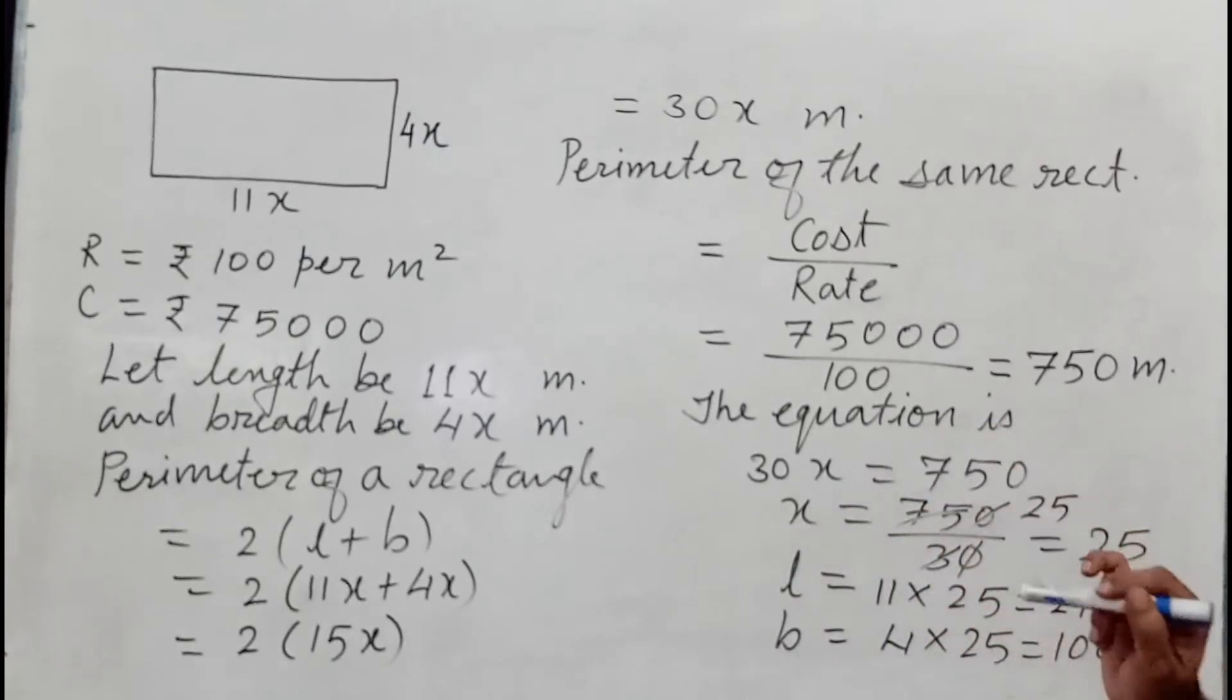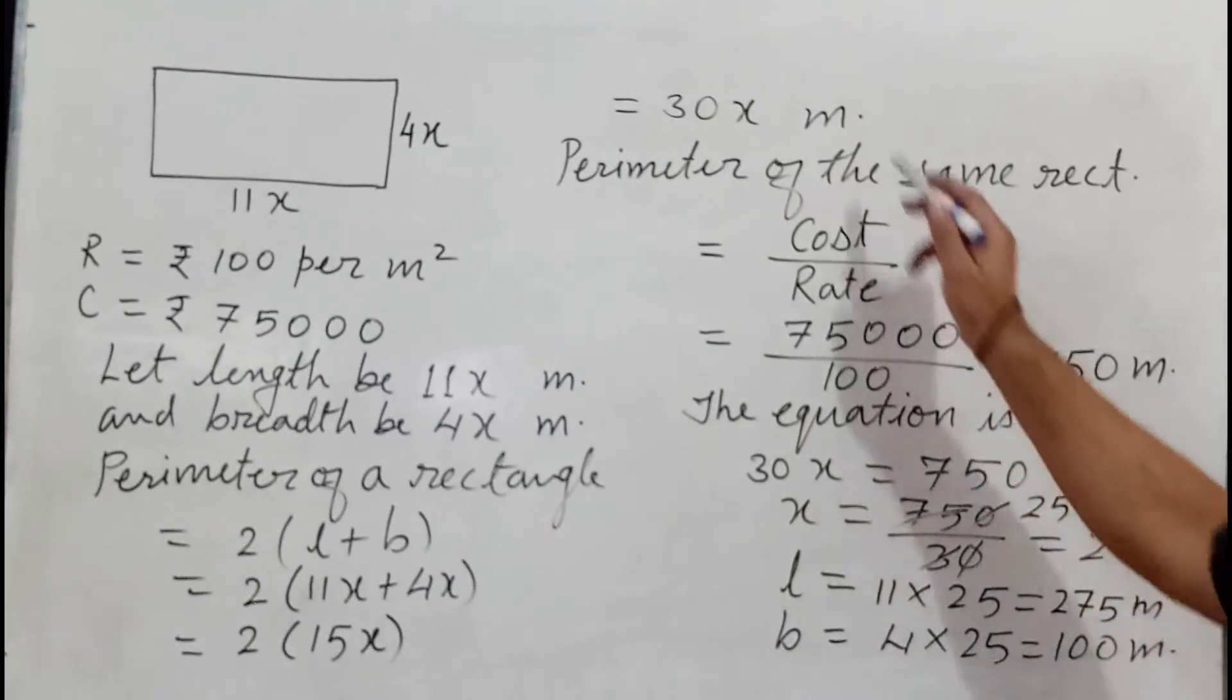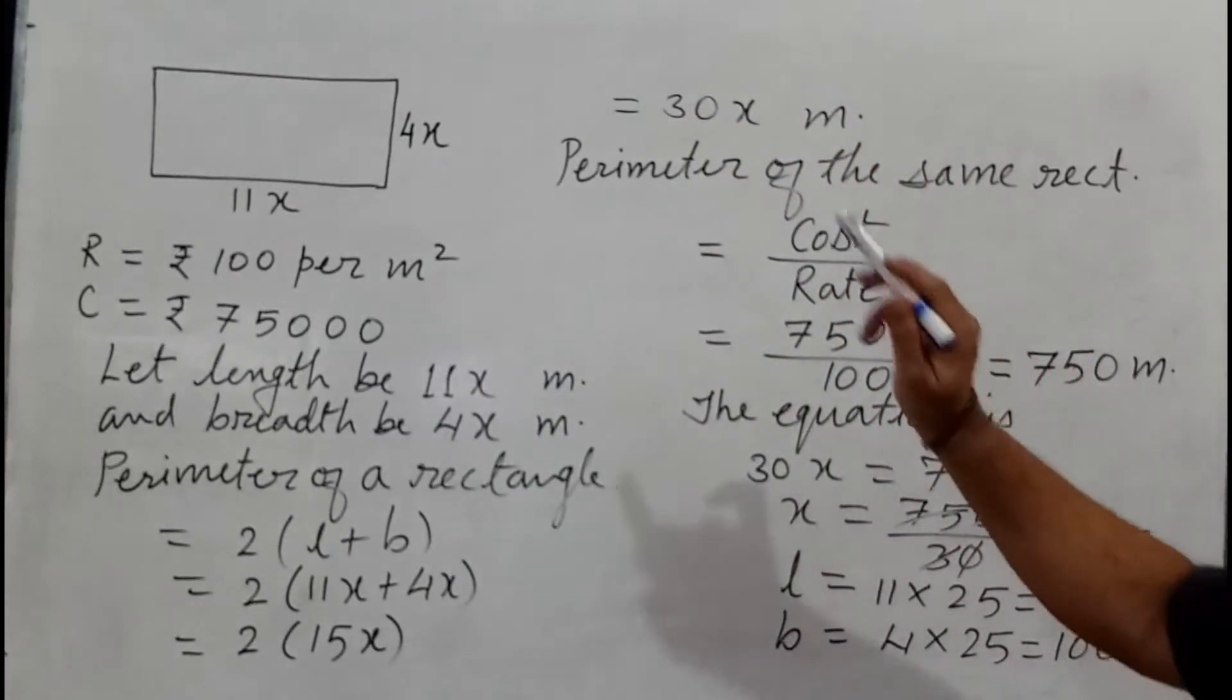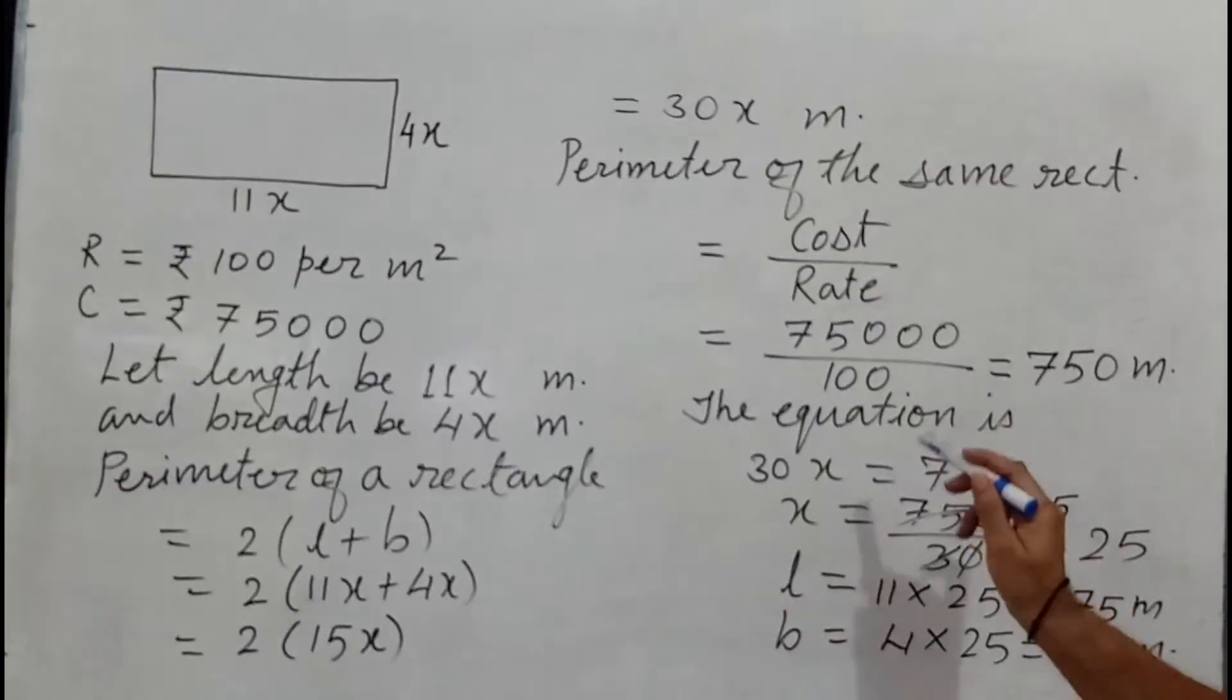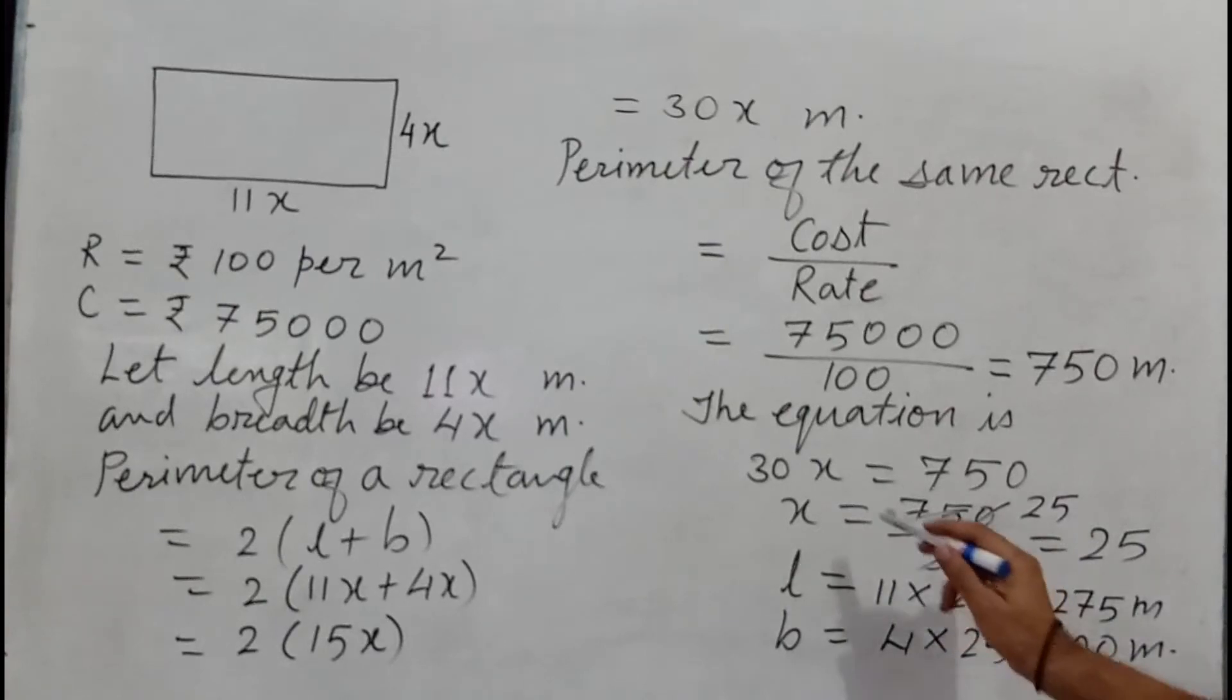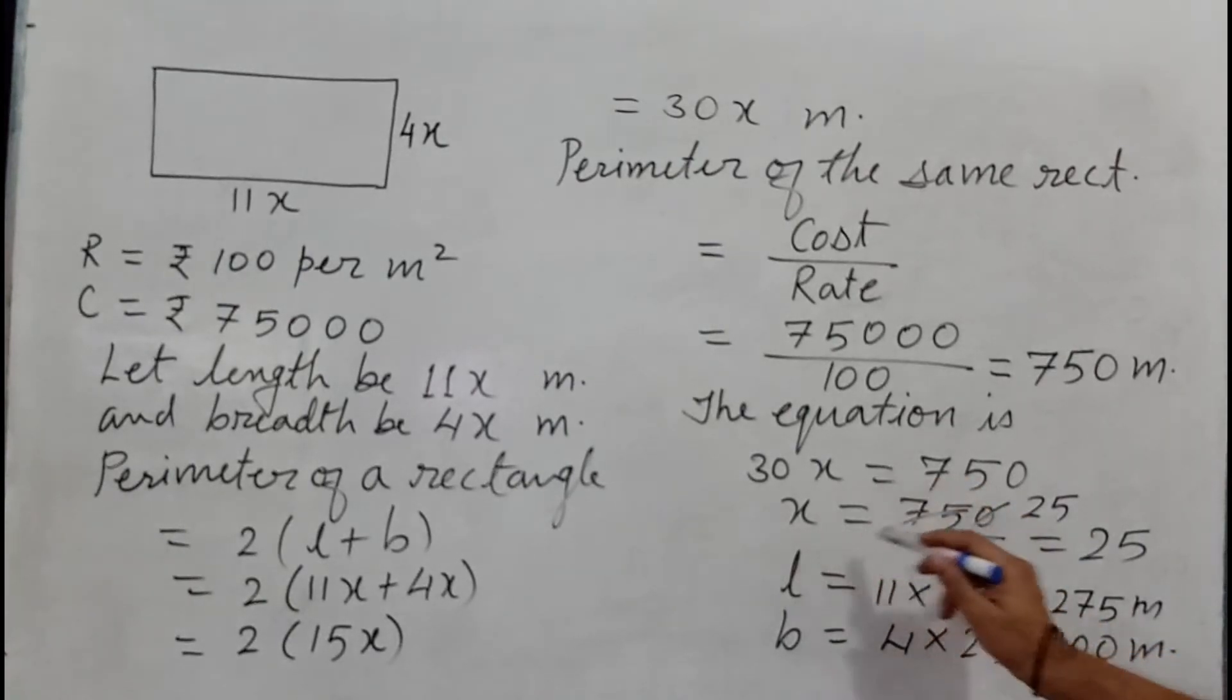Then we form the equation. The equation is 30x equals to 750, because 30x is the perimeter of the plot and 750 also perimeter of the same plot. So the equation is 30x equal to 750. Then simplified: x equal to 750 divided by 30.